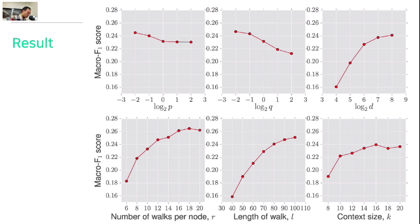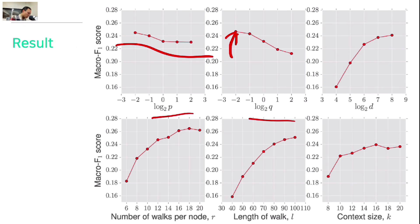Results show that depending on the choice of p and q, performance differs significantly — the difference can be quite large in some cases. Parameter sensitivity analysis by fixing p and q follows the same observations as before.